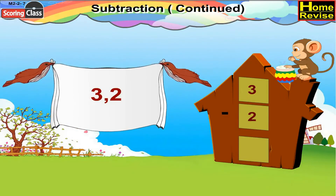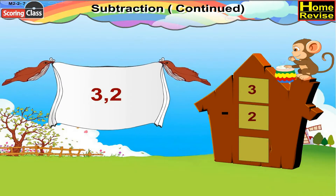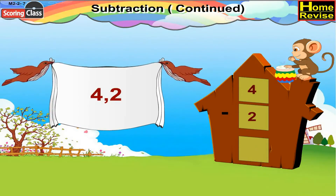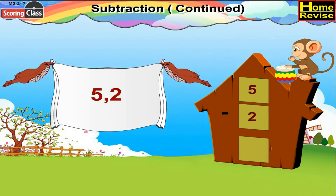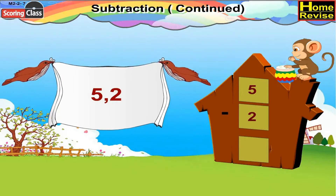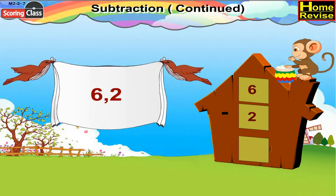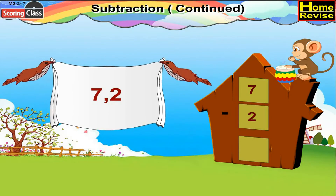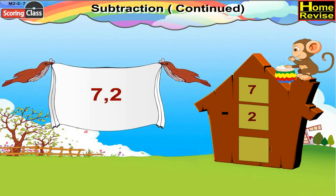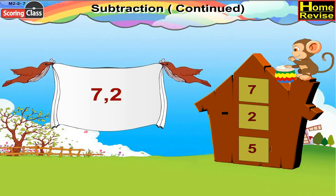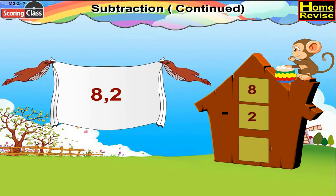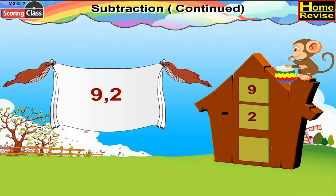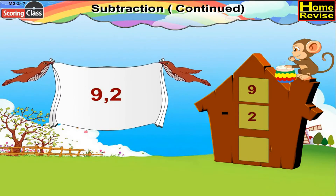What about three minus two? Three minus two would be one. How about four minus two? Four minus two is two. Five minus two is three. Six minus two — you're right, it is four. Seven minus two is five. What about eight minus two? Eight minus two is six. Nine minus two — it is seven.